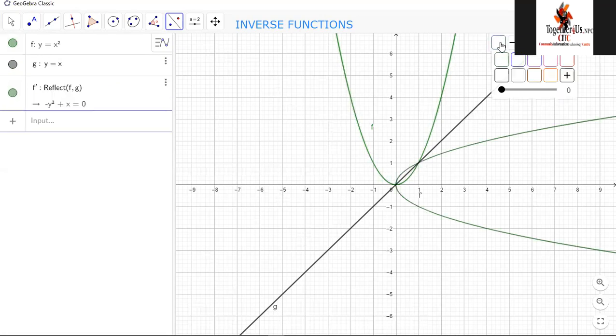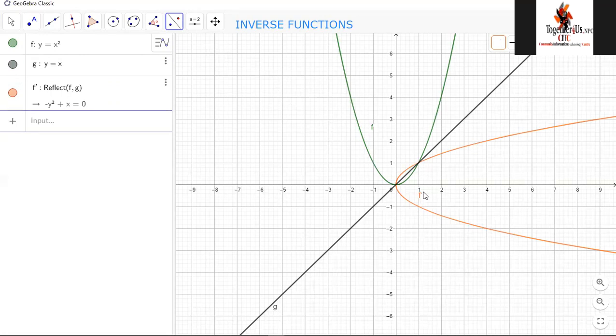And there is my line of reflection. I'm gonna use a different color for the reflected picture here for the reflected function. Oh yeah, whichever way you wanted. I don't want to say function because we can see the inverse here is not a function anymore.